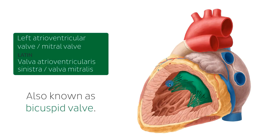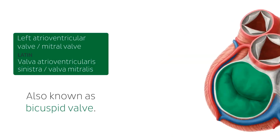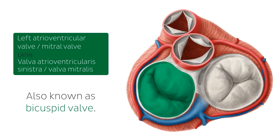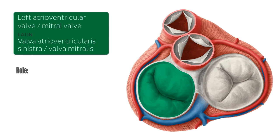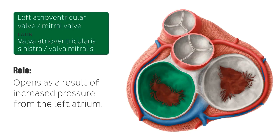As you can see, this is the left ventricle, and the left atrium should be around here. In terms of role, the left atrioventricular valve — the mitral valve — highlighted in green from this superior view: during diastole, a normally functioning mitral valve will open as a result of increased pressure from the left atrium as it fills with blood.